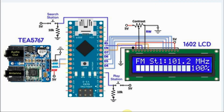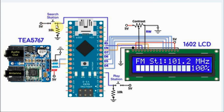A circuit diagram of the implemented FM receiver is shown here. We have the TEA5767 interfaced with the Arduino using an I2C connection. We have the 1602 LCD interfaced with the Arduino using digital pins. We also have two push buttons: one used to search and store FM stations, and the other used to play the FM stations. A long press on the play button also puts the device into standby mode.